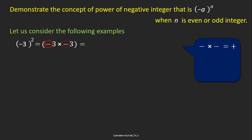Here, minus times minus equals plus, and 3 times 3 equals 9. So the answer is positive 9. When the exponent is even, the answer of a negative base integer is positive.